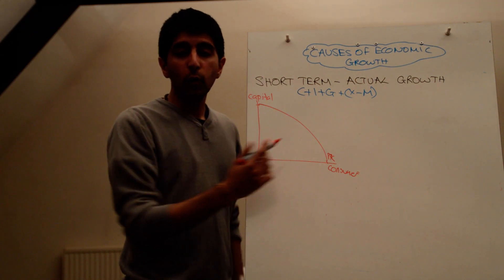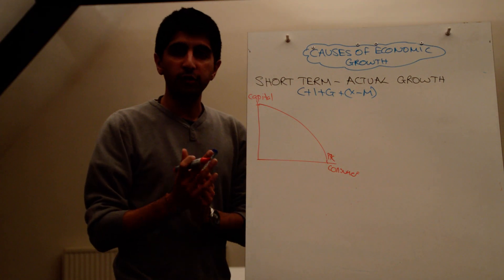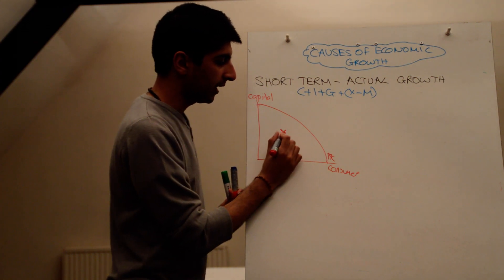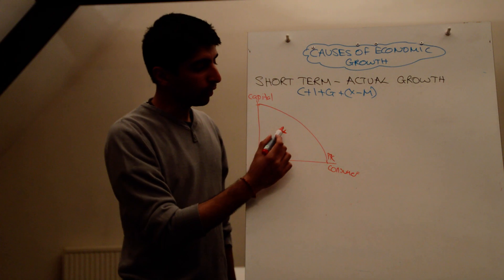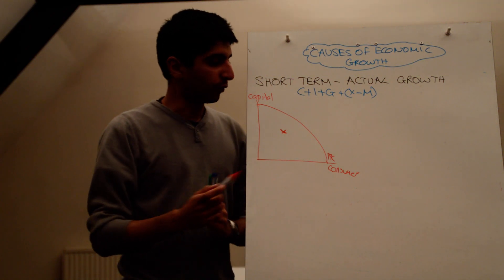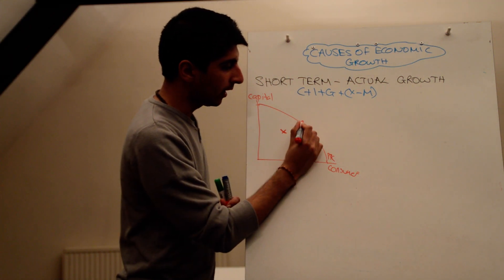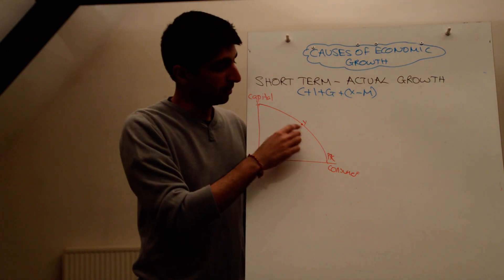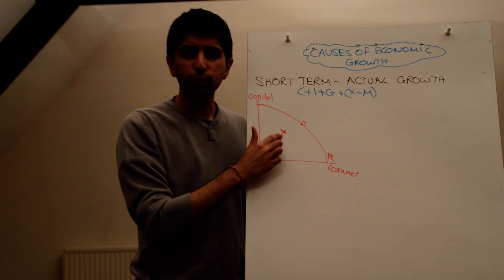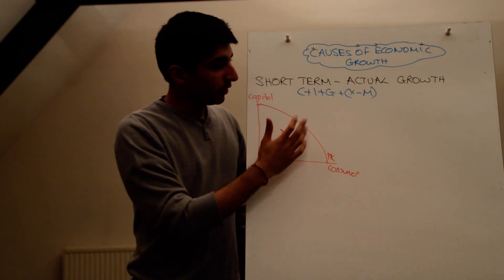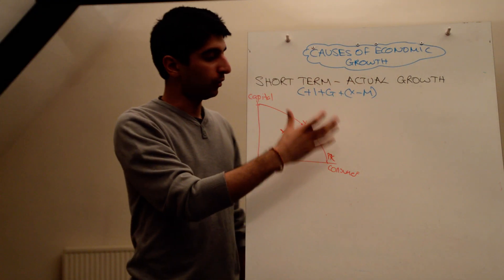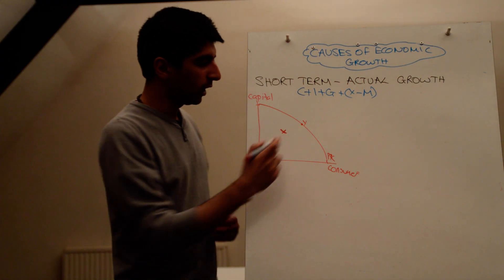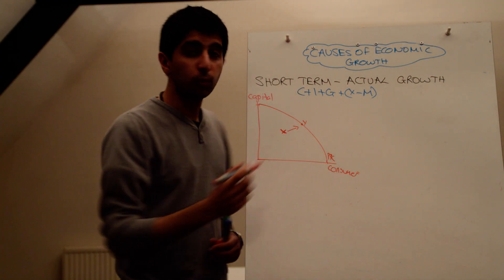If we're on the curve, we're producing the maximum possible amount. But if we're inside the curve — let's say at point X — there is still growth. That's our actual level of growth. We could be at point Y. So our potential growth could be at point Y, but our actual growth is at point X. That's what we mean by actual growth, and in the short term, that's what we're measuring. An increase in short-term growth will take us from X towards Y.